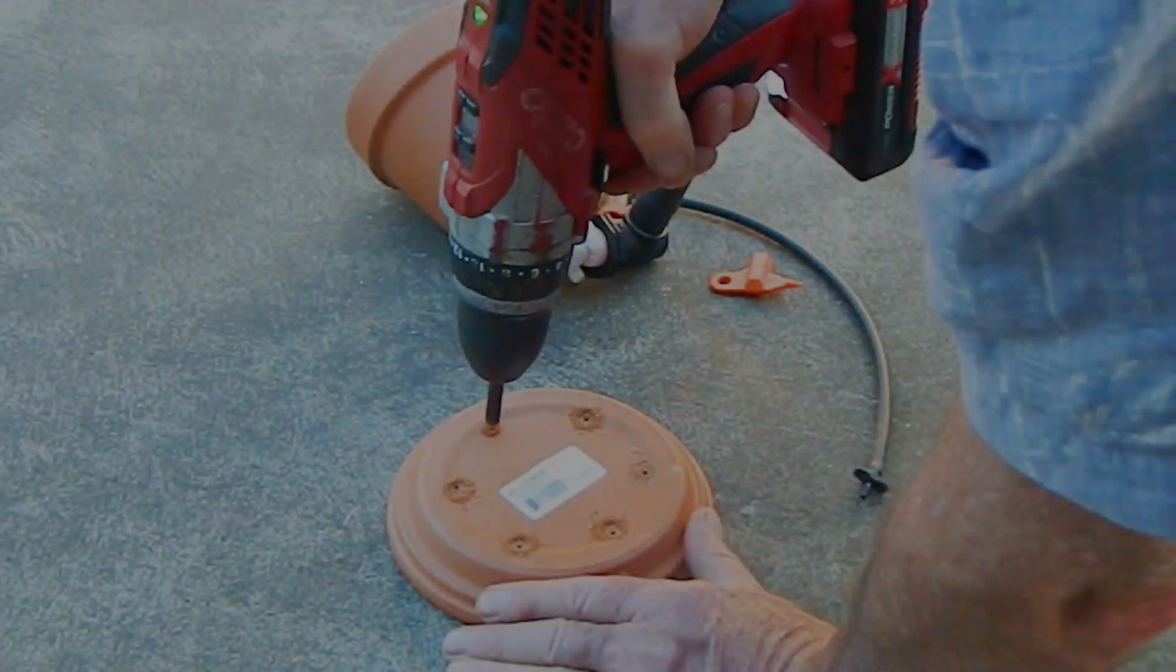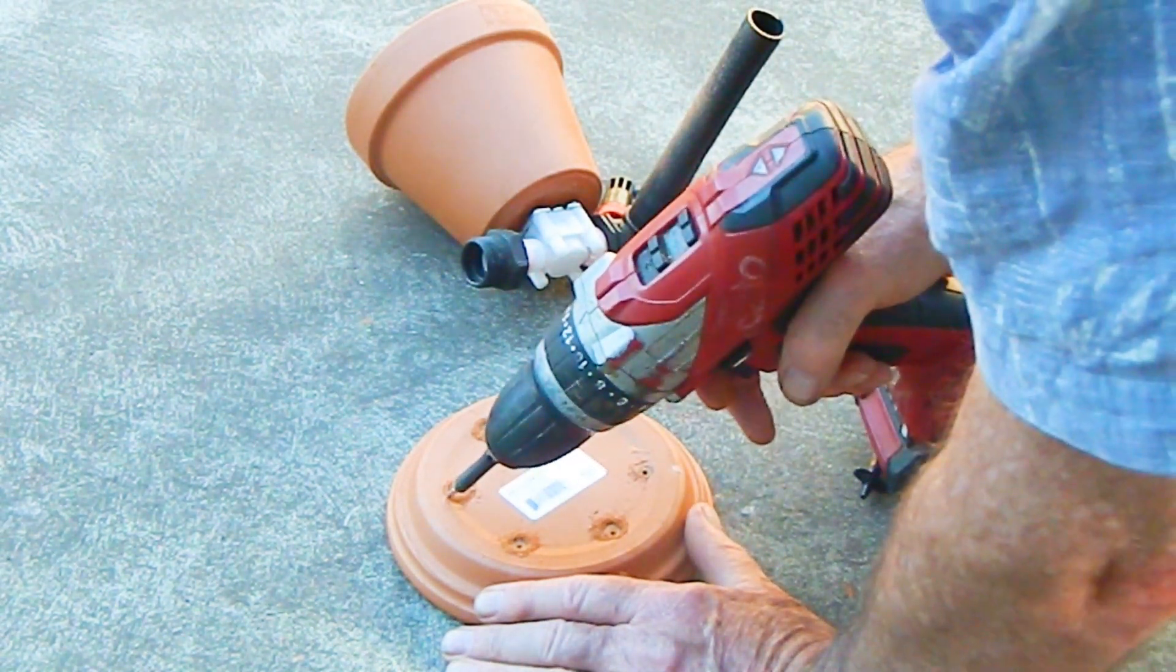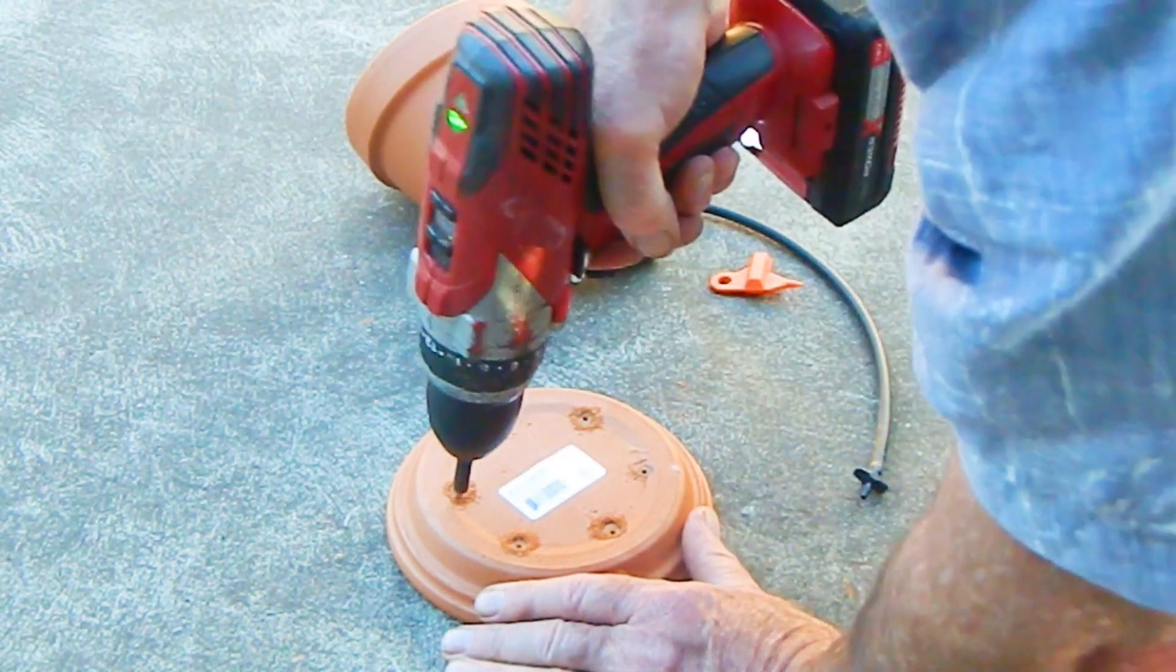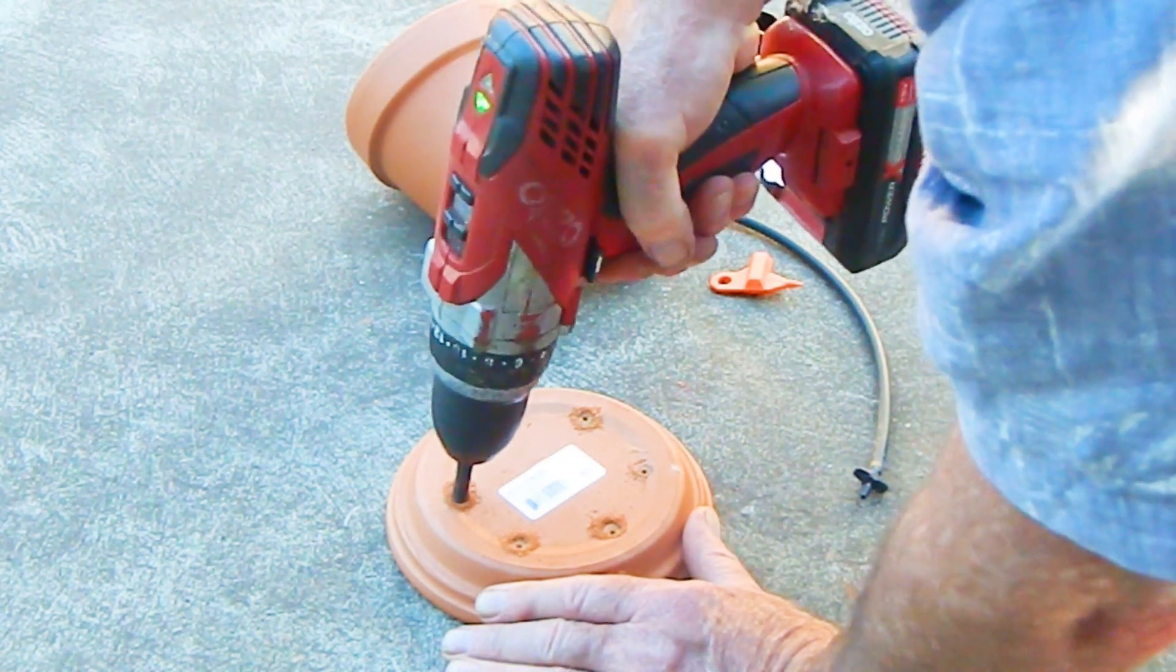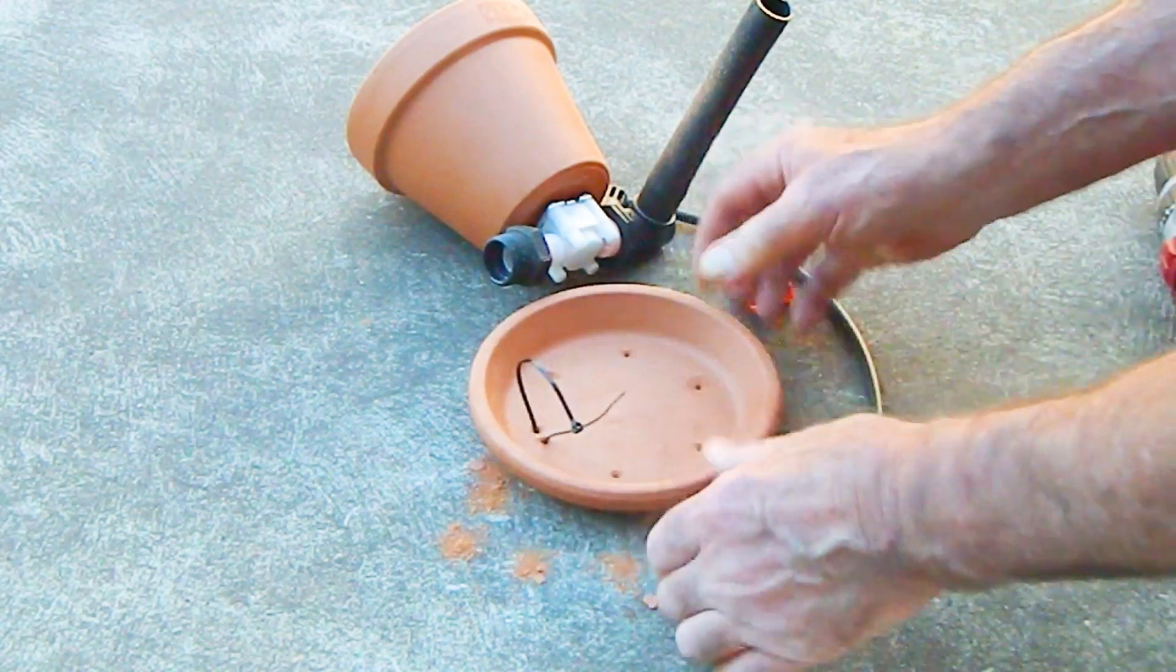Using a masonry bit, drill 6 equispaced holes in the terracotta saucer. Drill an extra hole next to one of these drain holes in order to attach the cable tie to the saucer.